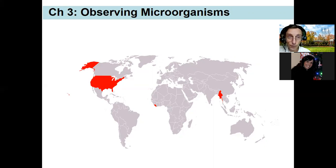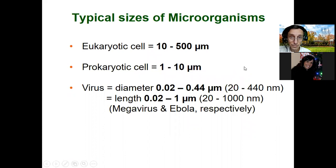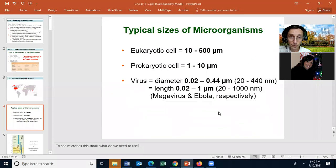The second reason why you should know the metric system is that science and medicine both use it. When a doctor prescribes medication, they don't say take so many ounces of a drug — they say take so many grams of the drug, or give the patient so many cc's of penicillin. A cc is a cubic centimeter, which is one milliliter. So you need to know the metric system because science and medicine use it, and most countries in the world use it.